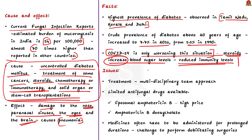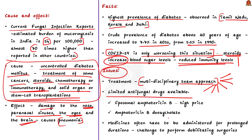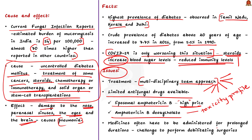The treatment of mucormycosis requires a multidisciplinary team approach including microbiology, pathology, radiology, infectious diseases, surgery and paediatrics. However, according to the author, this multidisciplinary approach is not feasible on a large scale, especially in areas with limited medical access. There are also limited antifungal drugs available. The standard drug is liposomal Amphotericin B, which is priced out of reach for many. Amphotericin B deoxycholate is cheaper but has an unfavorable toxicity profile. All these medicines often have to be administered for prolonged duration, making sustained treatment difficult.